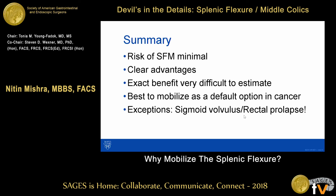In summary, the risk of splenic flexure mobilization is minimal and it has clear advantages, though the exact benefit is very difficult to estimate. I think it is best to mobilize as a default option in cancer. The exceptions are sigmoid volvulus, rectal prolapse, and a Hartmann's procedure — those are the three operations where I don't routinely mobilize it.